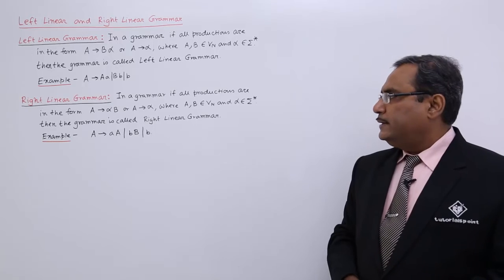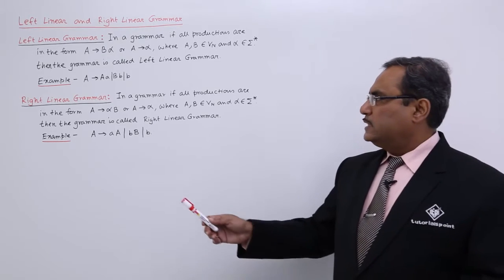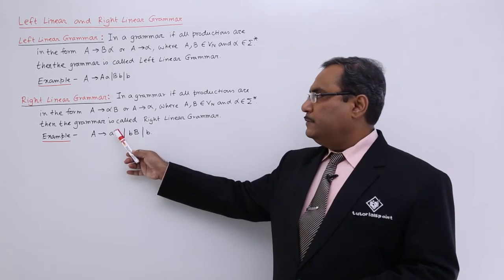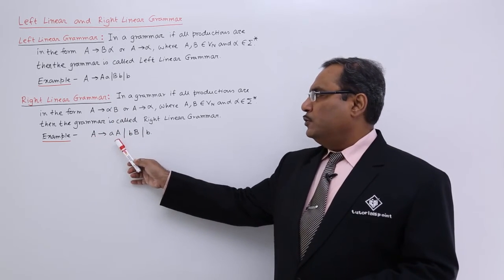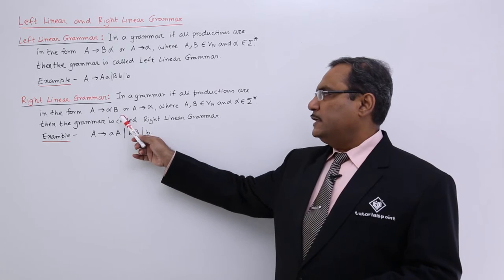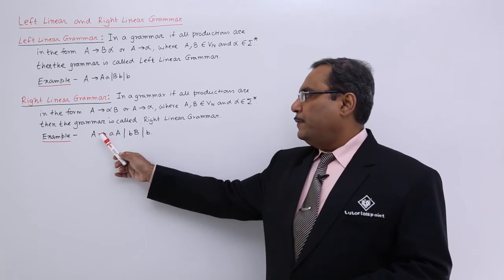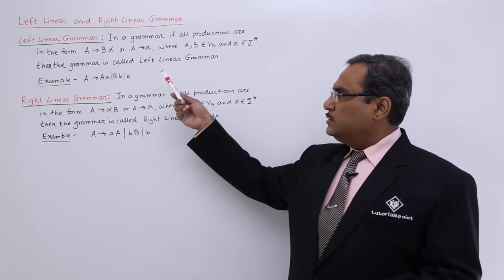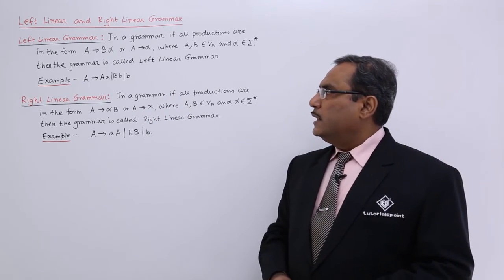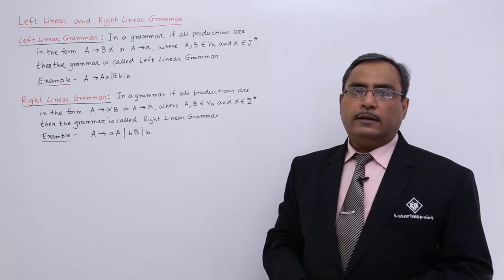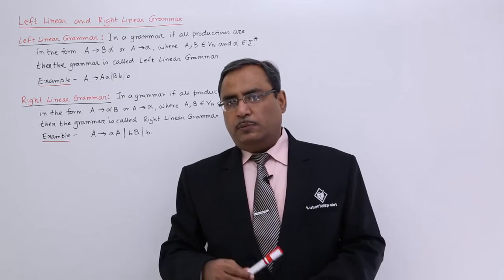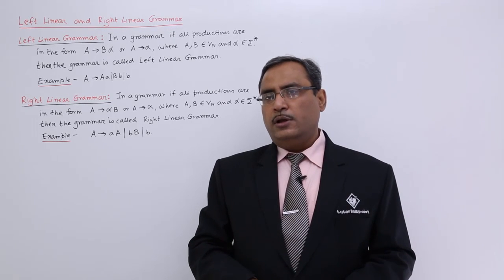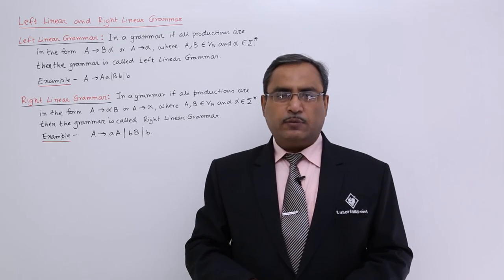Right linear grammar can be expressed as: capital A produces small a capital A, capital A produces small b capital B, and capital A produces small b — all falling in this particular form. Thus we have defined left linear grammar and right linear grammar with examples. To solve different GATE problems, this concept will be required, which is why we have discussed it with proper examples. Thanks for watching this video.